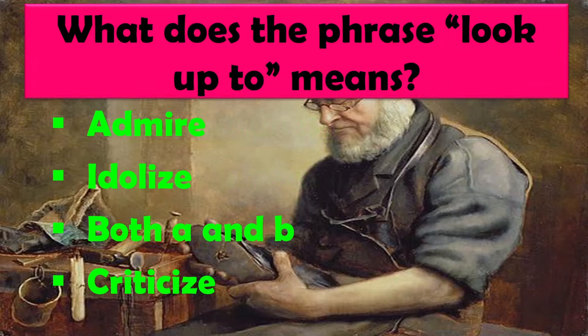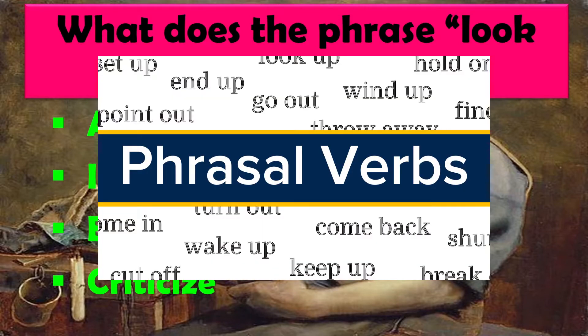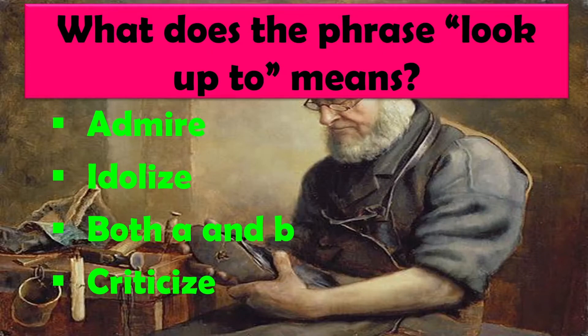What does the phrase 'look up to' mean? Vakyansh 'look up to' ka kya arth hai? Jab verb ke saath koi preposition lag jaati hai to uska meaning change ho jaata hai — use hum phrase kehte hain. Options: Admire — prashansa karna, idolize — kisi ko idol maanna, both A and B, criticize — kisi ki aalochana karna. Right answer is both A and B.